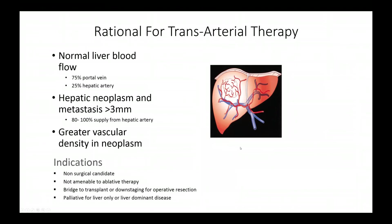The rationale for any transarterial therapy: the normal liver obtains 75% of its blood flow from the portal vein and 25% from the hepatic artery. However, hepatic neoplasms above three millimeters generally derive most or all of their supply from the hepatic artery, and most tumors including HCC have much greater vascular density within the tumor than normal liver. Indications include patients not eligible for surgery or ablation, bridging to transplant or downstaging for resection, and palliative treatment for liver-only or liver-dominant disease.